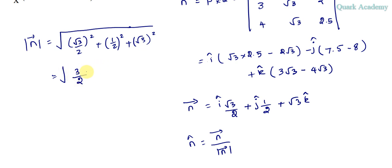So we will get 3 by 4 plus 1 by 4 plus 3. This will become 4, 3 plus 1 plus 12, so 16 by 4, and we'll get 2, and this is the magnitude of n vector.